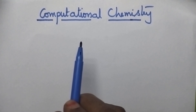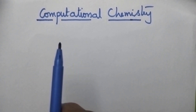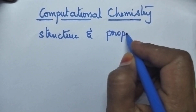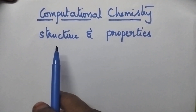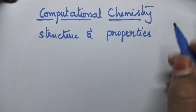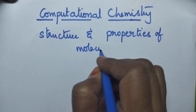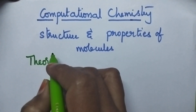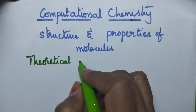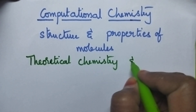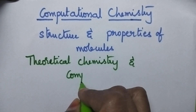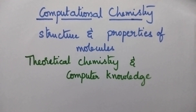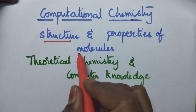Computational chemistry is an advanced topic in chemistry that is highly useful to study the structure and properties of molecules. Especially, this computational chemistry uses theoretical chemistry and computer knowledge to determine the structure of molecules along with their properties.